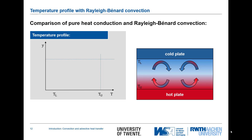Let's look at the temperature profile in the case of Rayleigh-Bénard convection. The profile has an S-shaped curve between the upper and lower plates. At the center location, the temperature gradient is very small compared to the outer parts, because in the center the advective motion of the molecules has a dominant effect — there is no need for a high temperature gradient to transport heat since fluid motion is doing that.